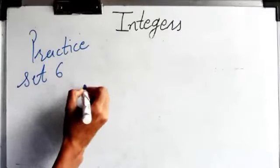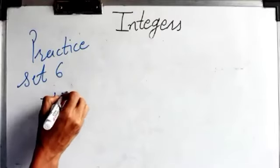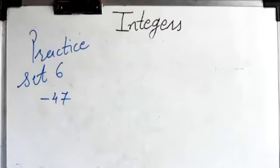So, first is 47. What is the opposite of 47? 47 means which sign? It can be plus sign. So, opposite to plus minus means numbers will be the same. Only you have to change the sign. Only you have to change the sign.